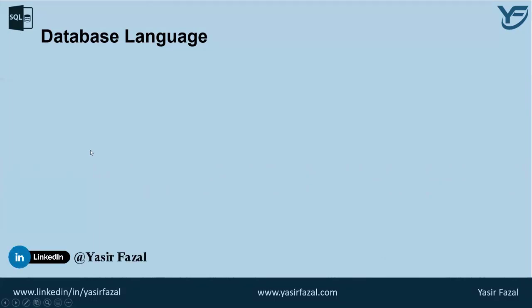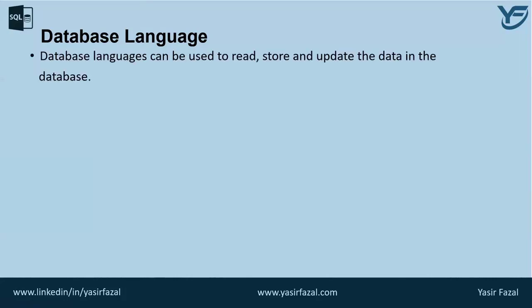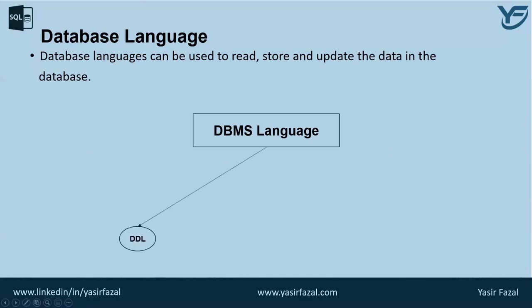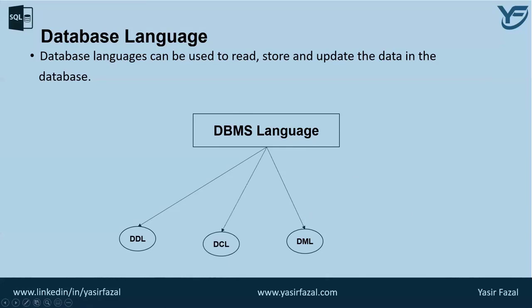With respect to the functionality of database language, any DBMS language is subcategorized into four languages. The first one is DDL, which is the Data Definition Language, and it is used to define the database structure or the schema of the database. The next one is DML, which is Data Manipulation Language, and it is used for accessing and manipulating the data in the database.